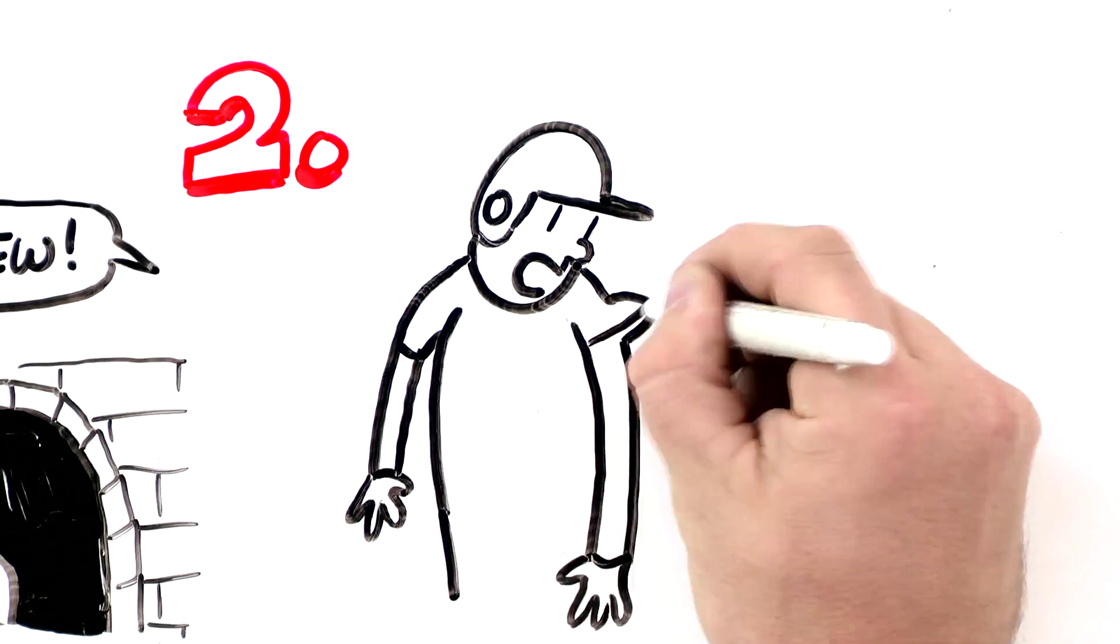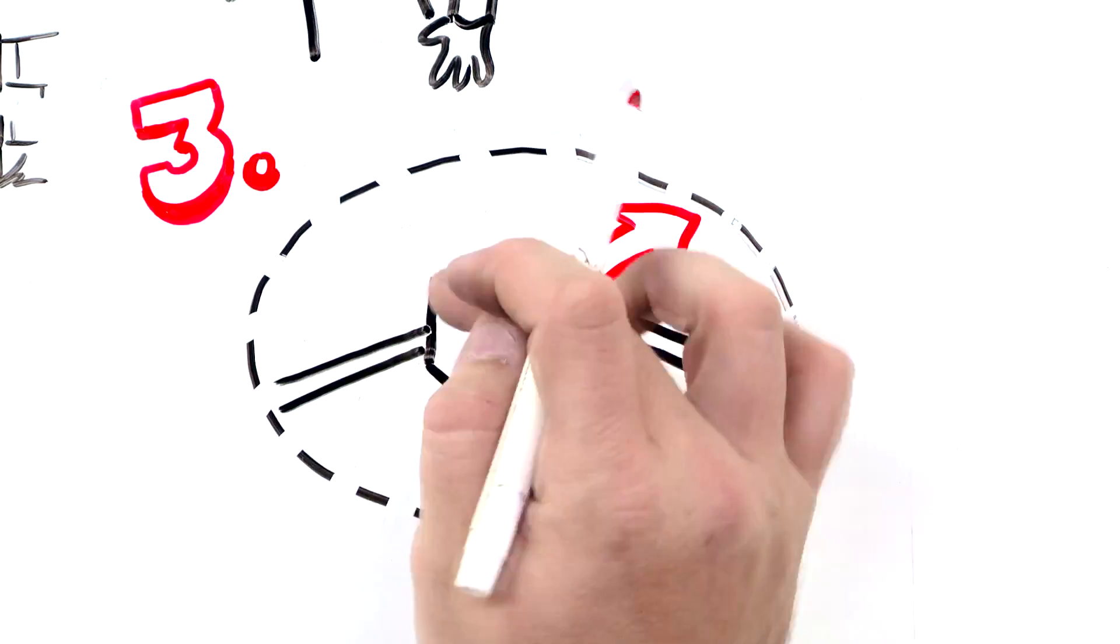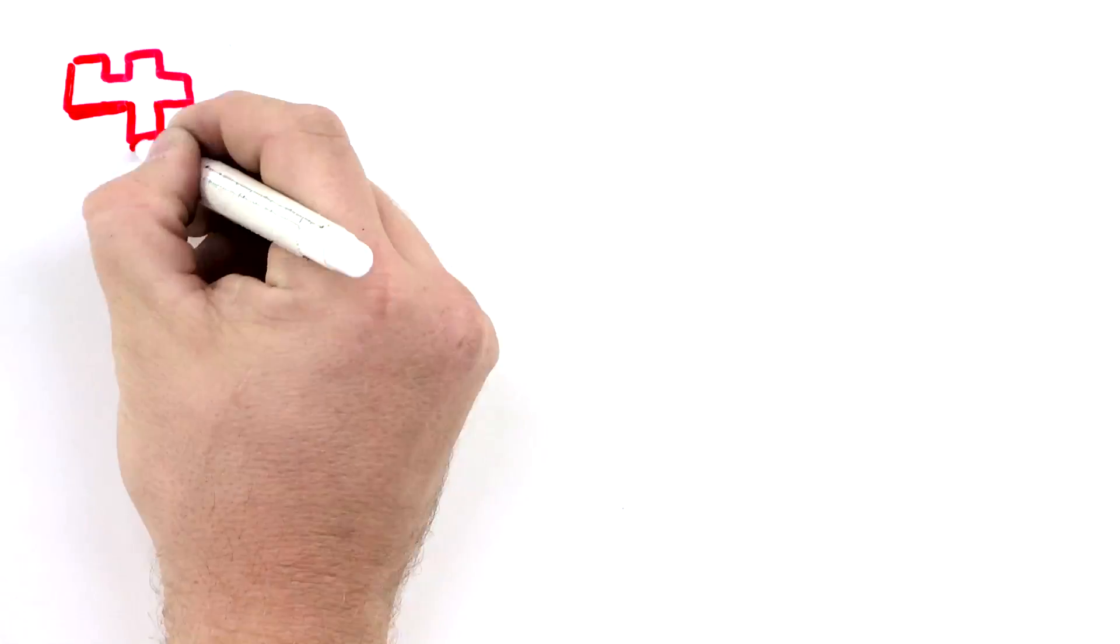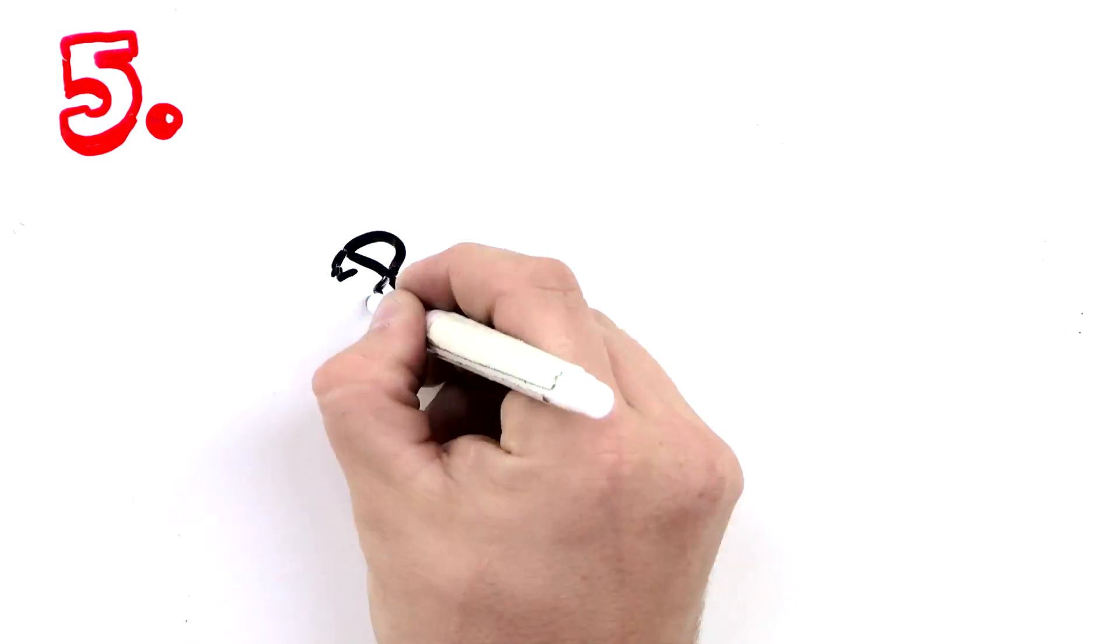When hit by a pitch, don't rub the mark. Don't stand on the dirt cut out at home plate while the pitcher is warming up. Don't walk in front of a catcher or umpire when getting into the batter's box. Don't help the opposition make a play.